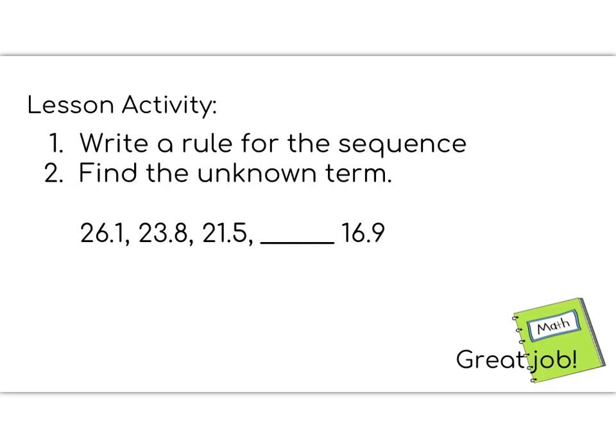Great job so far, 5th graders. It's time for your lesson activity. This lesson activity has two parts. Step 1 says write a rule for the sequence, and then step 2 says find the unknown term. So we're filling in that blank. Remember that the way we do this is we look at two terms that are next to each other, and we find the difference. So I could do 26.1 minus 23.8 to find out what the rule is, and then I need to continue that pattern to fill in the blank. This work should be done in your math notebook. Great job, 5th graders.